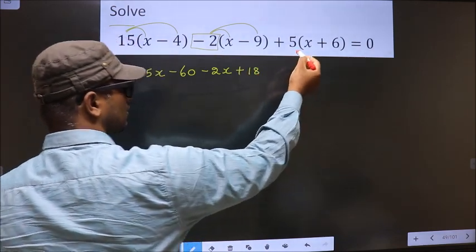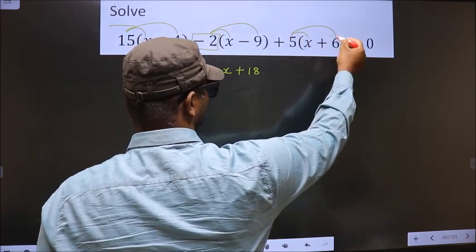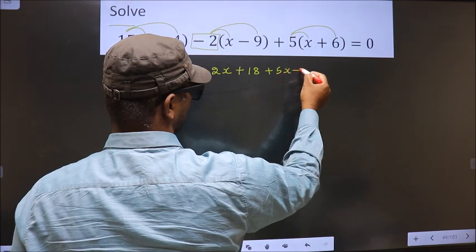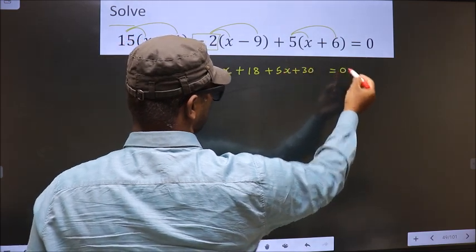Now here also we should open up the bracket in this way. So that is 5x plus 30 equal to 0.